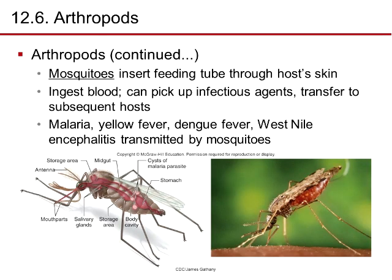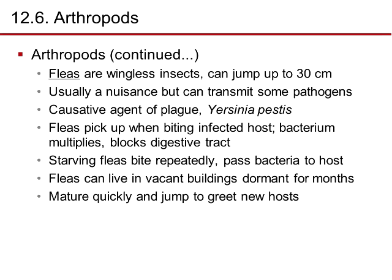Mosquitoes insert their feeding tube into the host's skin, ingest blood, pick up infectious agents, and transfer them to subsequent hosts. Malaria, yellow fever, dengue fever, and West Nile encephalitis are all transmitted by mosquitoes — different species of mosquitoes for each disease. Fleas are wingless insects that can jump 30 centimeters. They can transmit the agent of plague, Yersinia pestis: the bacteria multiplies and blocks the flea's digestive tract, so the starving flea bites repeatedly, passing the bacteria to each new host. Fleas can lie dormant in a vacant building for months and then jump to greet new hosts.